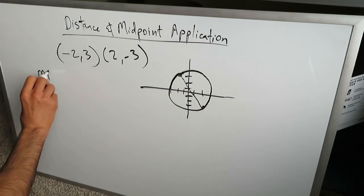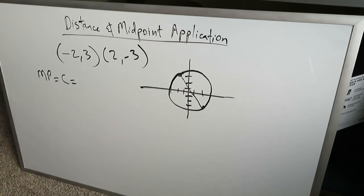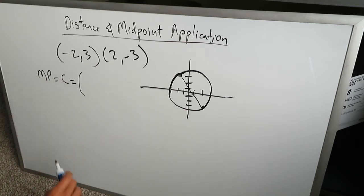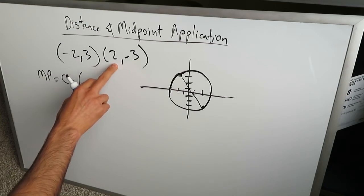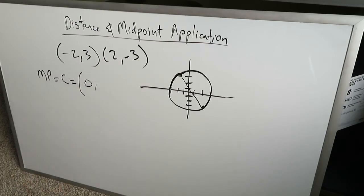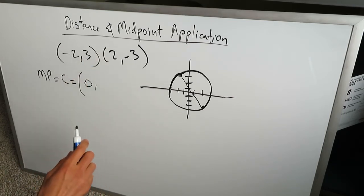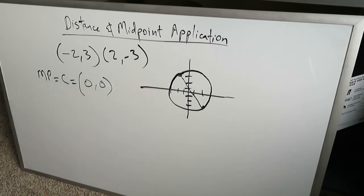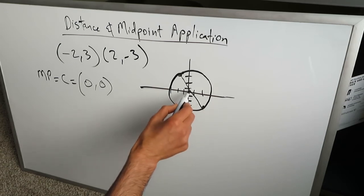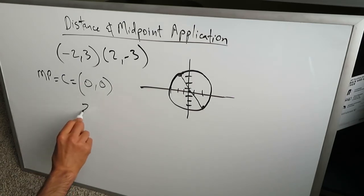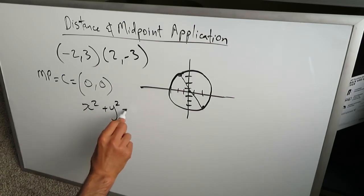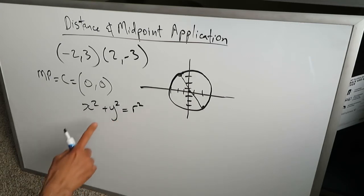I'm going to write MP for midpoint, but equal to C because the midpoint will represent my center. We know it's x1 plus x2 divided by 2: minus 2 plus 2 is 0 divided by 2, giving us 0. And y1 plus y2 divided by 2: 3 plus minus 3 divided by 2 is 0 divided by 2, giving us 0. So our center is at the origin. The midpoint of the diameter goes right through the origin, so we're looking at a circle equation of the format x squared plus y squared equals r squared — a center at the origin. All we have to do now is determine the radius.